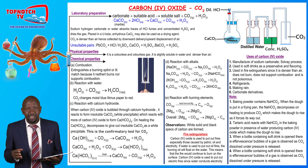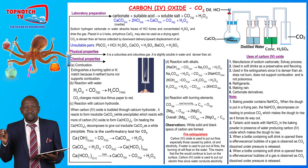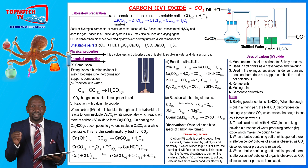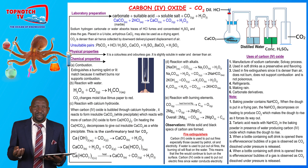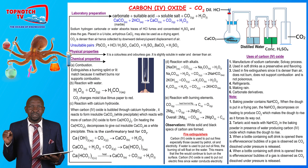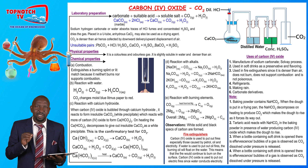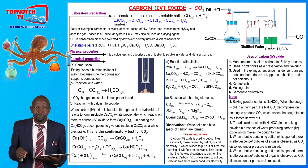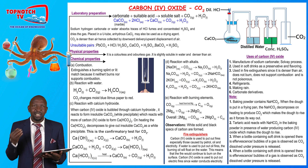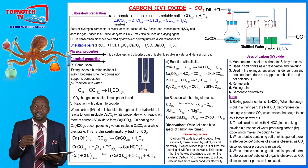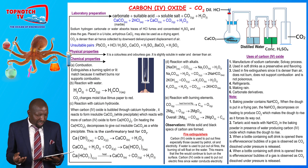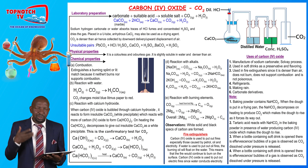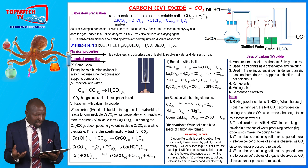This is due to the formation of insoluble lead(II) chloride, which coats the surface of the carbonate preventing further reaction. The same applies to lead carbonate with dilute sulfuric acid — the reaction starts, slows down and stops due to formation of an insoluble coat of lead(II) sulfate. Similarly, barium carbonate with dilute sulfuric acid forms an insoluble coat of barium sulfate, preventing further reaction. These are questions commonly found in examinations.